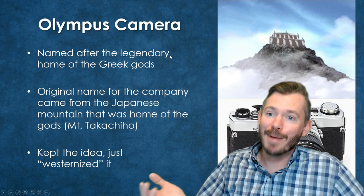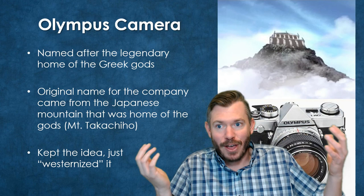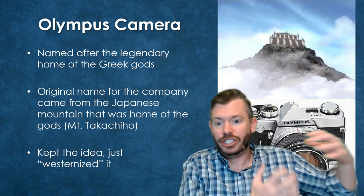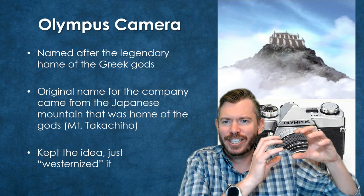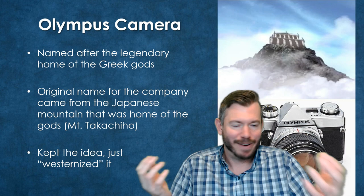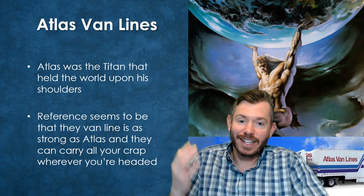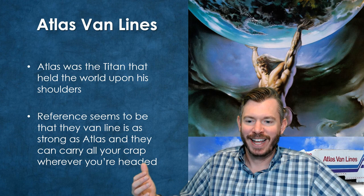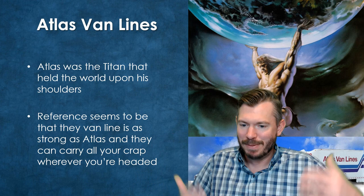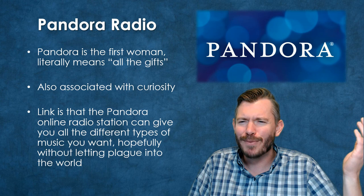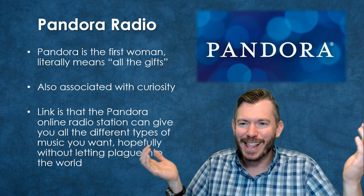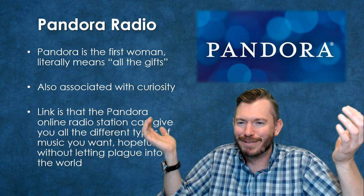Olympus Camera is a cool one — obviously named after Mount Olympus, the home of the gods. Originally it's a Japanese company, named after the Japanese mountain considered the home of the mythological gods there. It's kind of cool that they took the same concept, westernized it, and went with Olympus. We've got Atlas Van Lines — just like Atlas is holding up the world, Atlas Van Lines will hold up all your stuff as you carry it across the country. And Pandora Radio — I don't think anyone listens to this anymore before Spotify, but the idea is you can listen to all the songs, just like Pandora has all the gifts. It's giving you the gift of song.